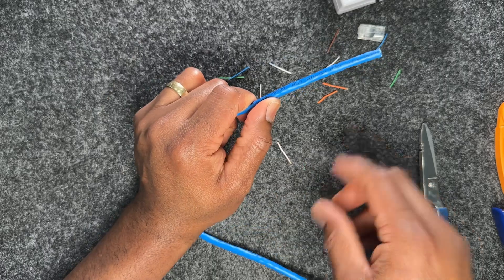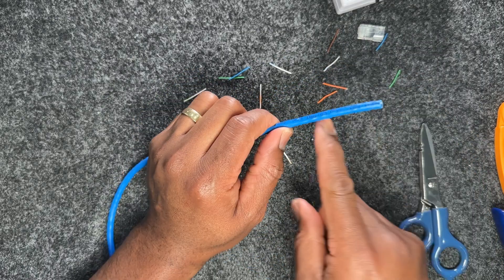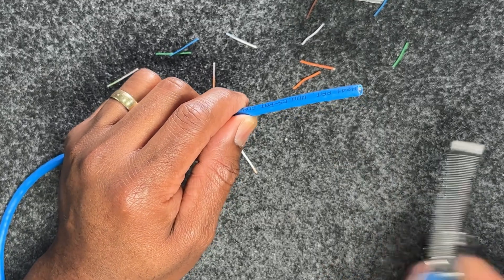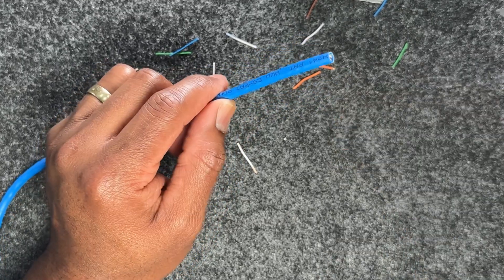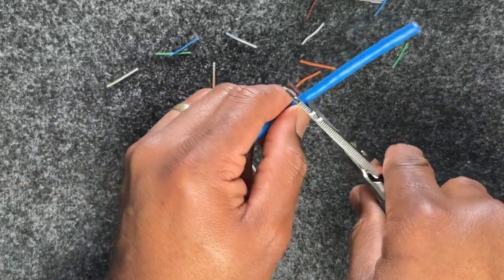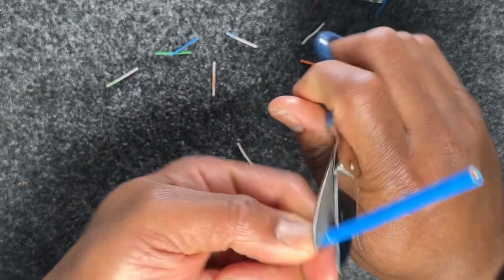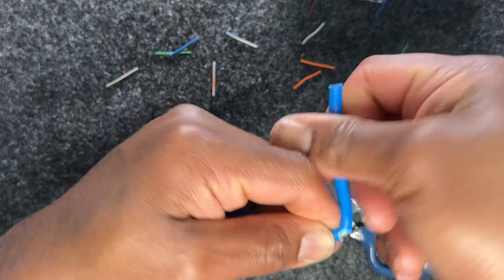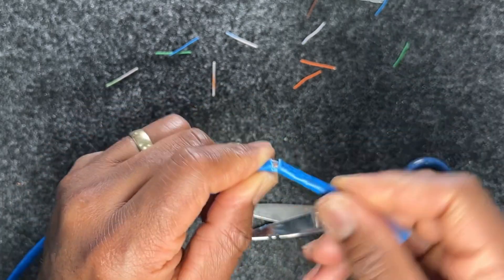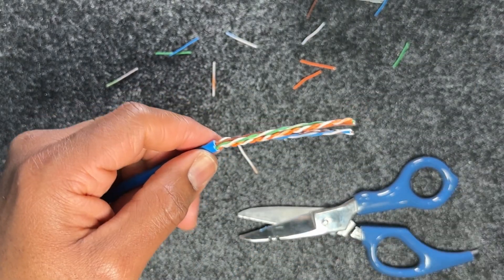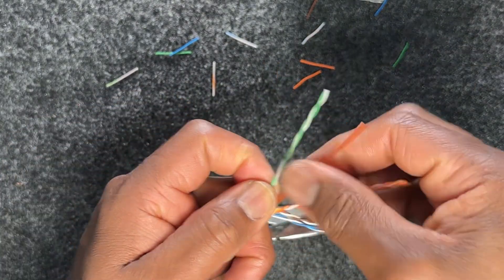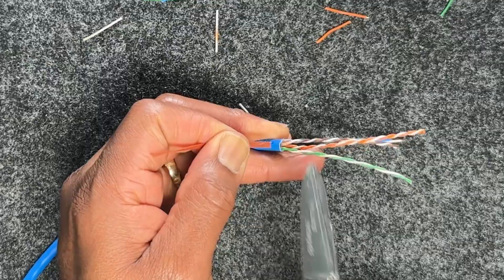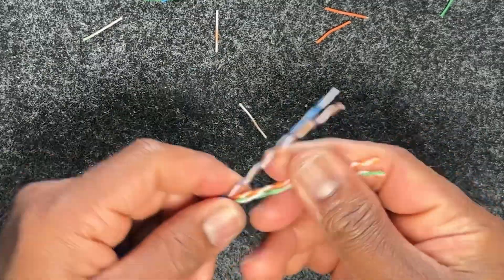On the opposite end, I'm going to do the 568B wiring scheme. I'll go through the same thing. This time I'm using different tools. I used that before, now I'm using the lineman scissors. I use the serrated edge to score on it, then bend it and break the jacket off exposing the individual pairs. I'll cut that off and start to unravel them.